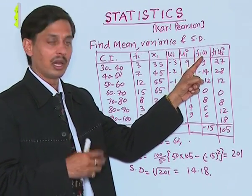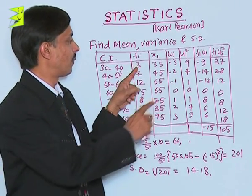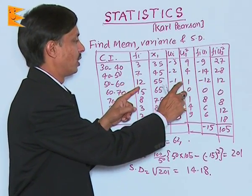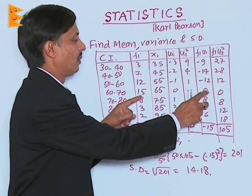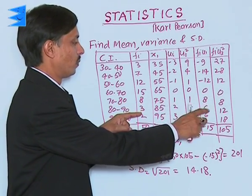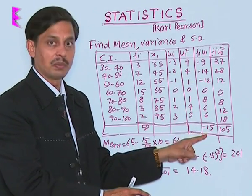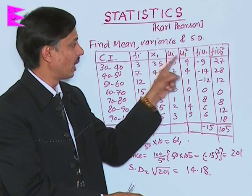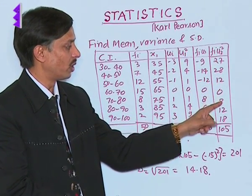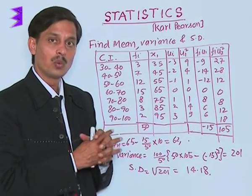We calculate fᵢuᵢ: -9, -14, -12, 0, 8, 6. The net sum is -15. Then fᵢuᵢ²: 27, 28, 12, 0, 8, 12, 18, with sum 105.